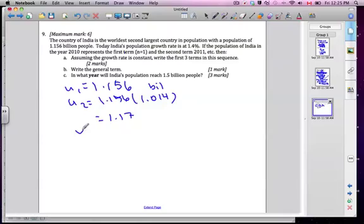Now U3, I'm gonna take 1.156 and multiply it - well that's how much it was in year 2. I need to multiply it by 1.014 a second time which will be squared. Which will end up being 1.19, three significant figures, for billions of people. So there's part A done, the first three terms.